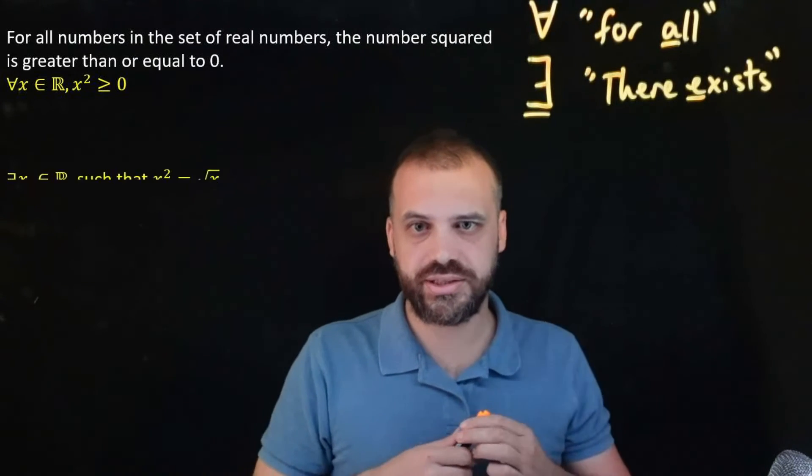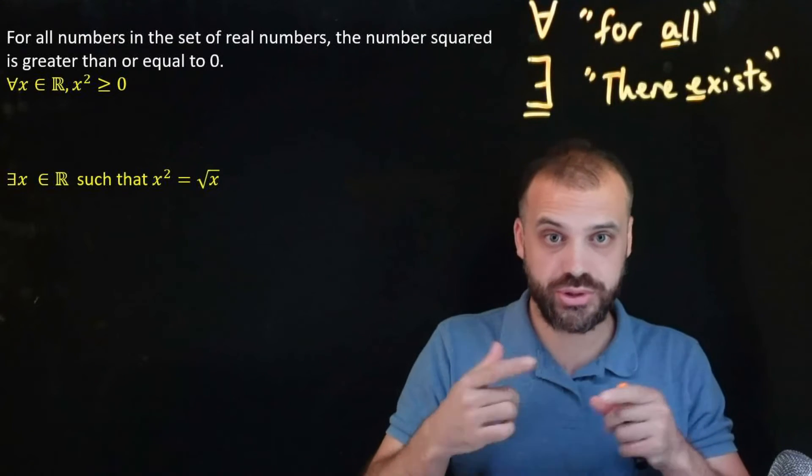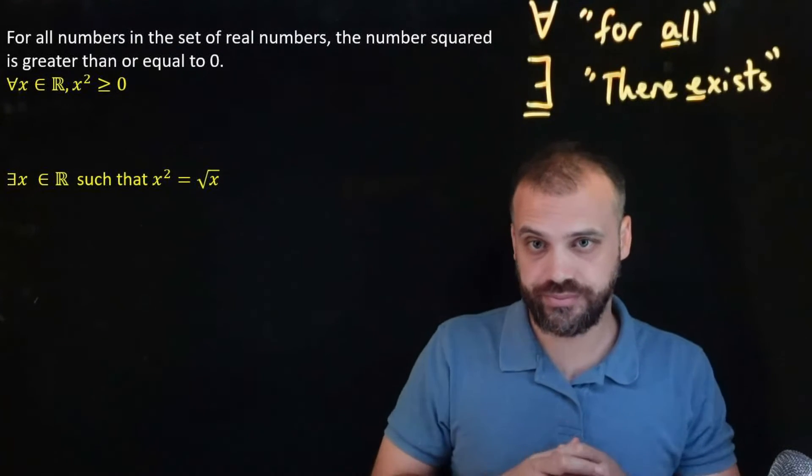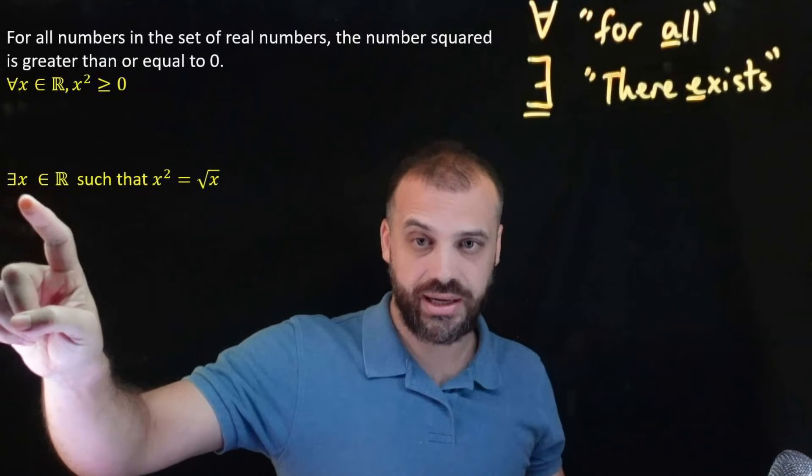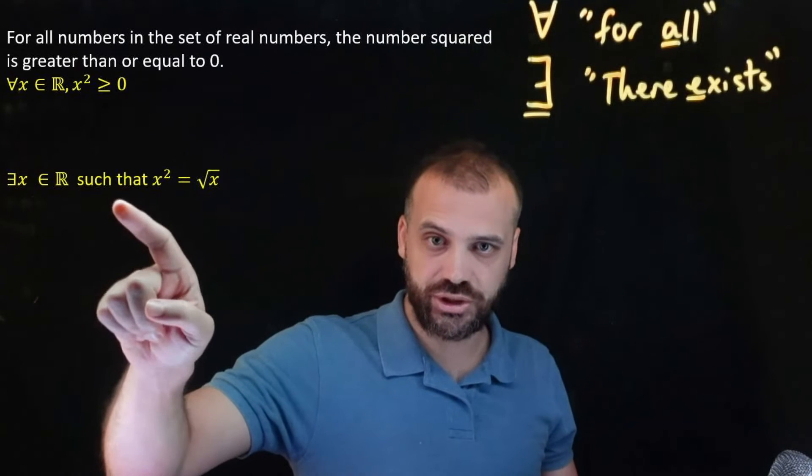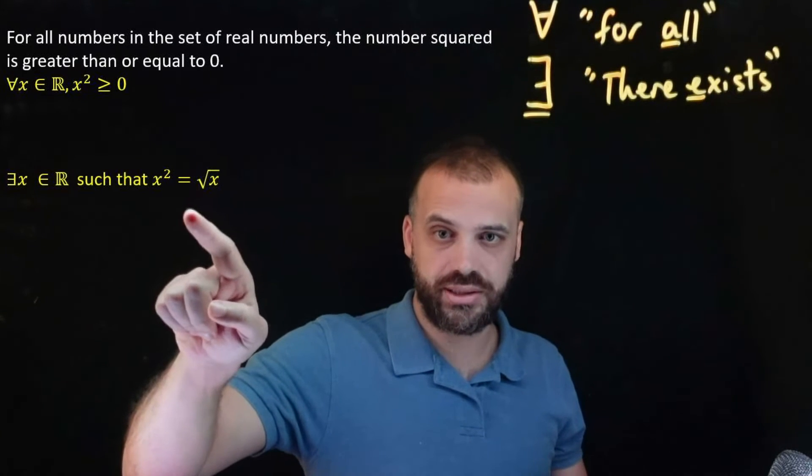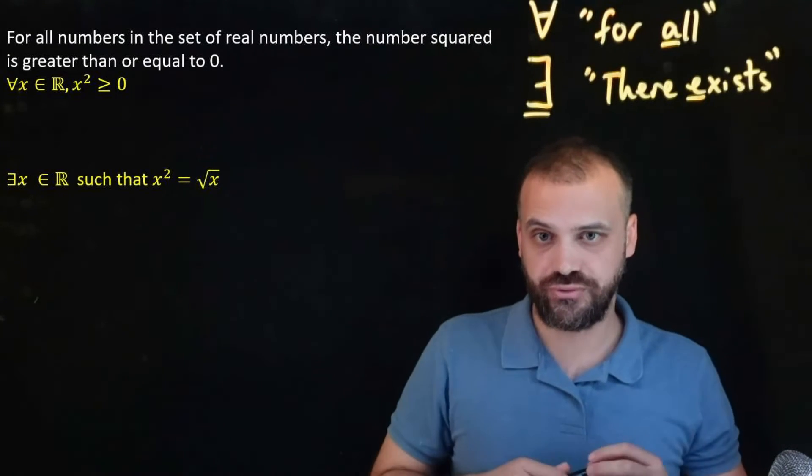Understand the game. Here's another sentence. Read it, pause it, think about it. I'm going to read it now. There exists a number x in the set of real numbers such that x squared is equal to the square root of x. So there is some number that that is true for.